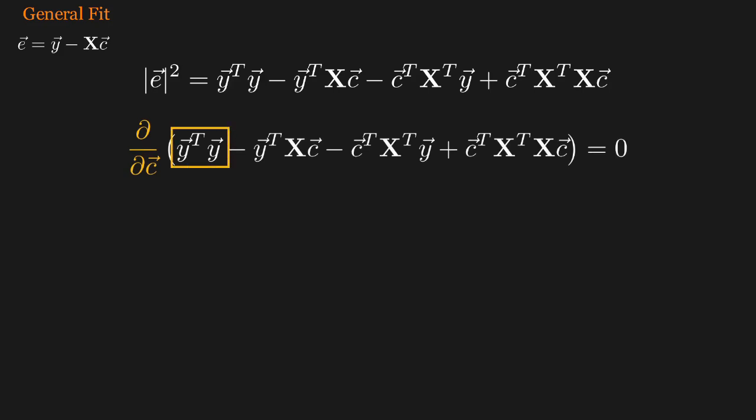Here we have a constant term because it contains no c's. And here are two linear terms that each contain one c. And here is a quadratic term because there are two c's multiplied together. And we already know how to differentiate a quadratic.